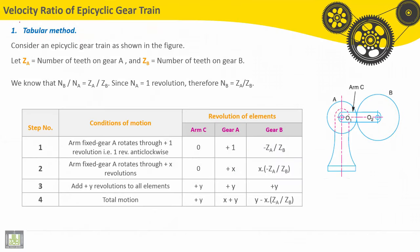We will begin immediately with the module on gears. I will present the first method, which is the tabular method. Consider an epicyclic gear train as shown here in this figure.